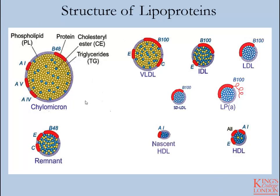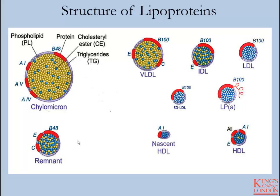These diagrams are cross-sections through the various lipoproteins and they illustrate the compositional differences in the different types of lipoproteins. You can see that all are made up of phospholipid, a particular apolipoprotein, cholesterol ester, as well as triglyceride stored in the center of the lipoprotein.